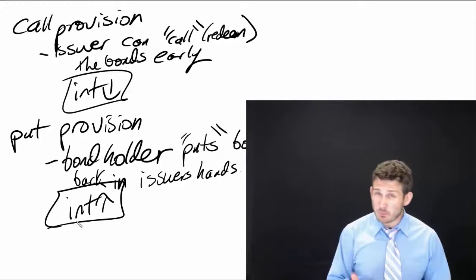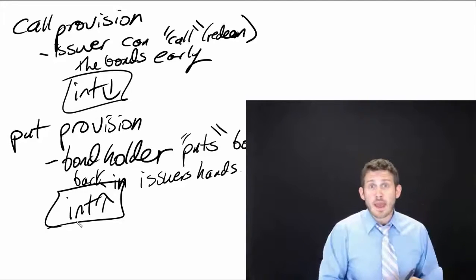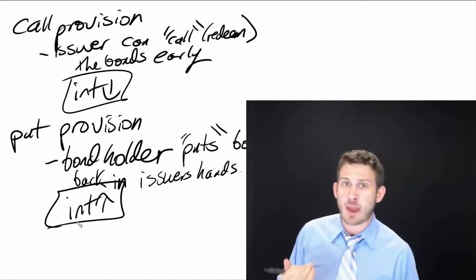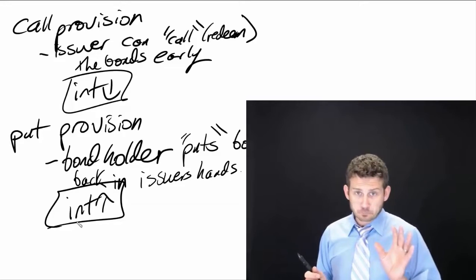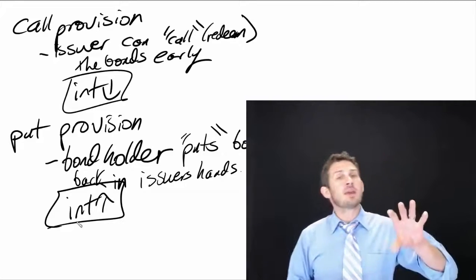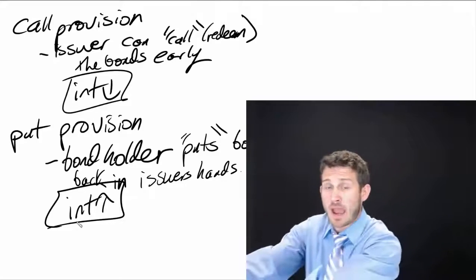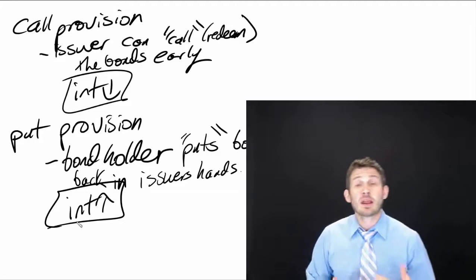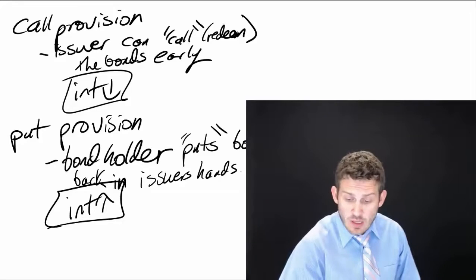One way to remember these: think about your grandmother standing on the front porch, ringing the bell and saying 'come on in' — she is calling you, just like the issuer is calling the bonds back. For the put provision, think of a parent putting their kids into grandma's house — the parent is taking the kids and putting them back, meaning the bond holder is returning the bonds to the issuer and getting their money back.